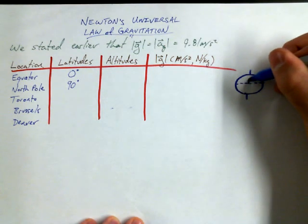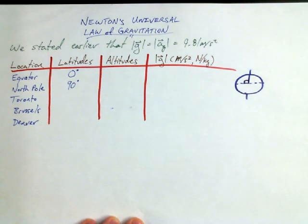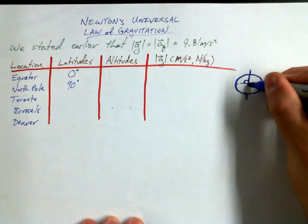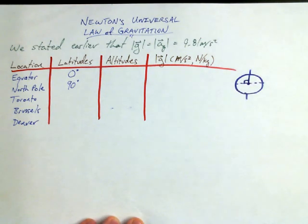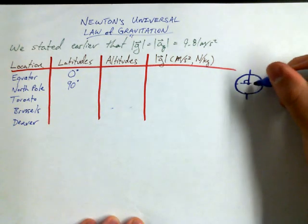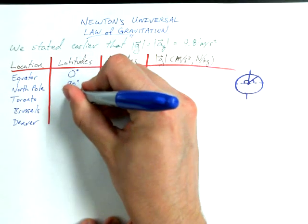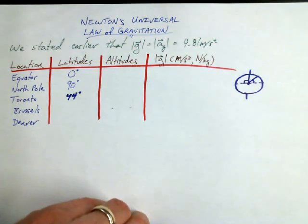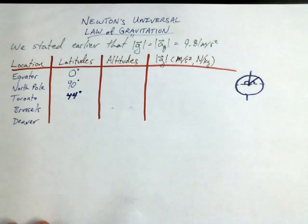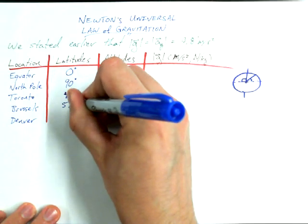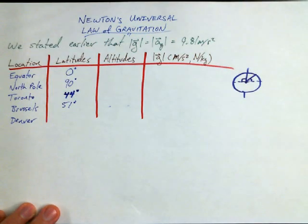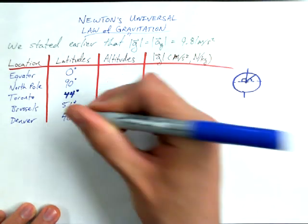So of course, the North Pole is at 90 degrees latitude because if I take a side view of the Earth, the line connecting the center of mass of the Earth to the geographic North Pole is 90 degrees relative to the equator. Makes sense. And then if we're going to pick on Toronto next, that angle there is about 44 degrees. If we're going to go to Brussels, it turns out that it's about 51 degrees. That's what latitude is, just to make sure that everybody's on the same page here. And Denver is at about 40 degrees.